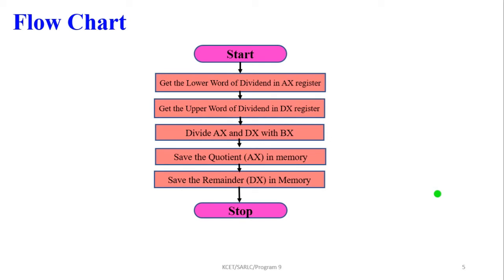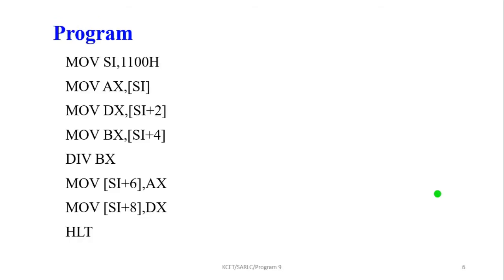The flowchart: get the lower word of the dividend into the AX register; get the upper word of the dividend into the DX register; divide AX and DX by the BX register, where BX contains the divisor value; save the quotient in AX and remainder in DX; finally, move those AX and DX values into the particular memory locations.